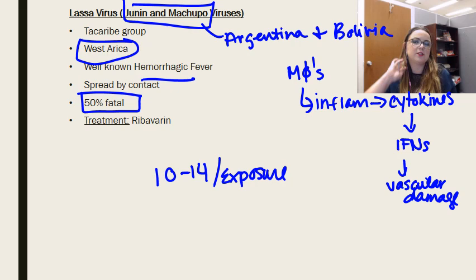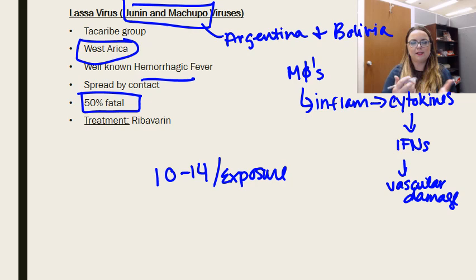It's a highly fatal illness — 50% of patients are likely to succumb to the infection. And even though it's spread initially by exposure through rodent excrement, because it's also in the blood, it can be spread by contact to medical personnel, who are at risk for transmission as well.